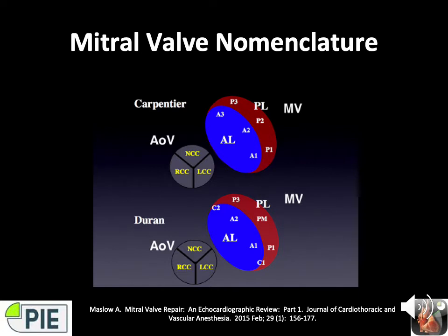In the Duran system there are two commissural areas, C1 and C2, with everything named according to attachment to the papillary muscles. Everything with a 1 — C1, P1, A1 — attaches to the anterolateral papillary, and everything with a 2 — C2, P2, A2 — attaches to the posteromedial papillary.